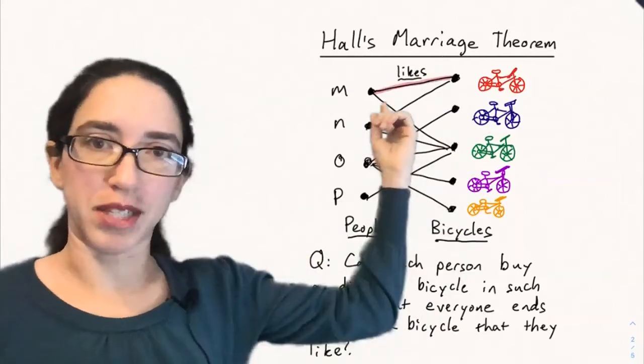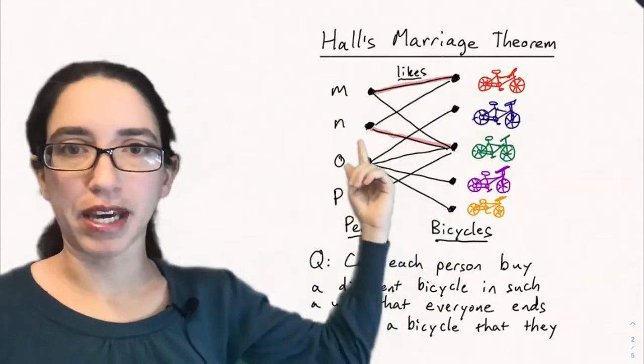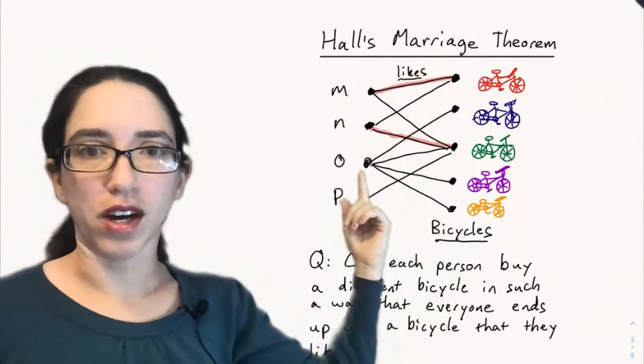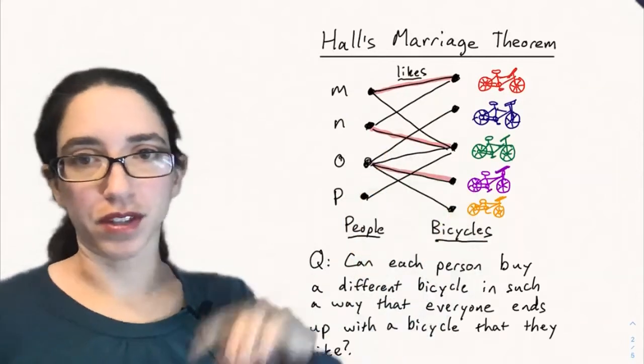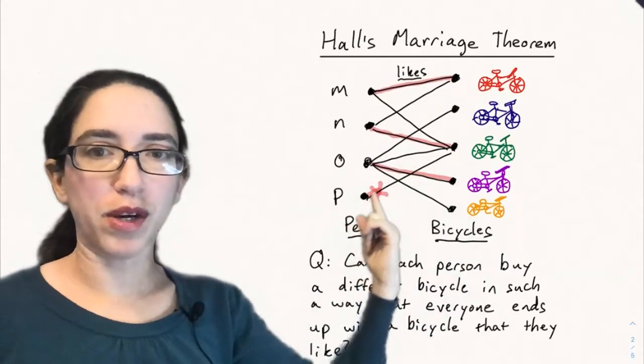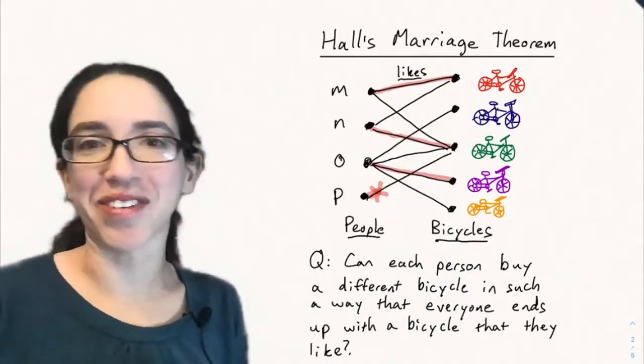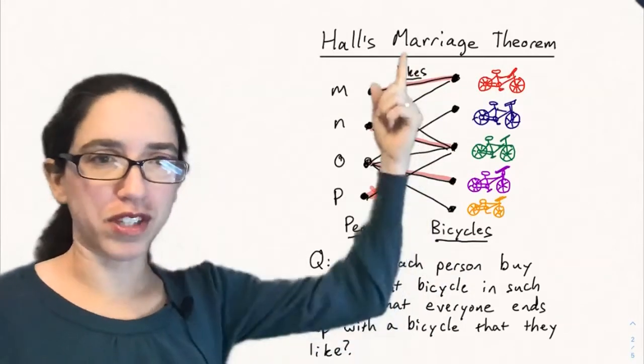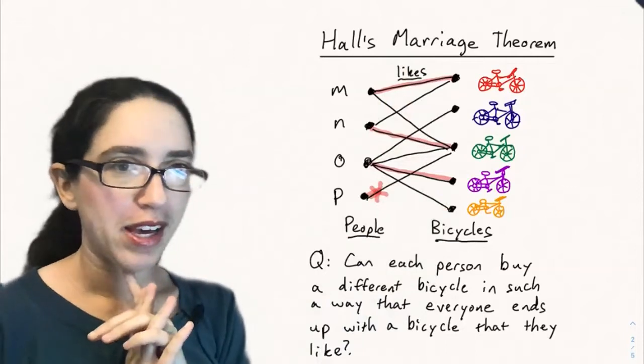But let's try to match these people with bikes that they like. So let's try to match M with the red maybe, and then N with green. O has a lot of bikes that they like. So let's match them to light purple. And uh-oh, P is stuck. Notice P only likes the green bike. So P is too specific there. Maybe there was a way that we could have shuffled around what we chose for M and O so that P would be happy. It's not clear.